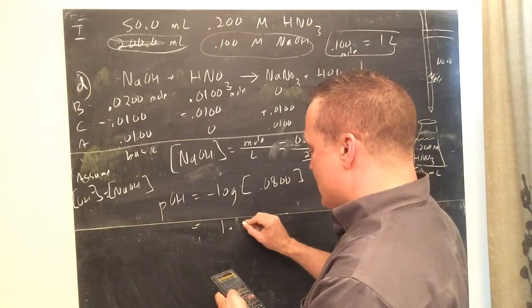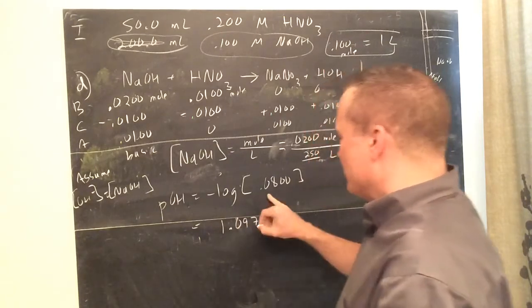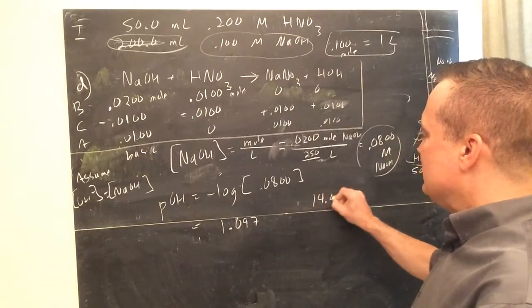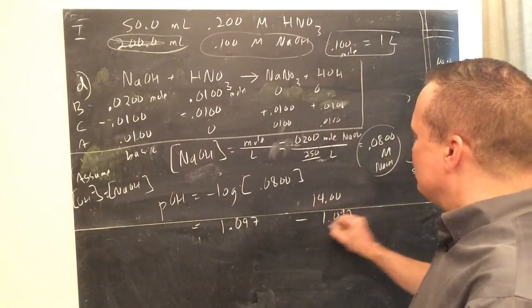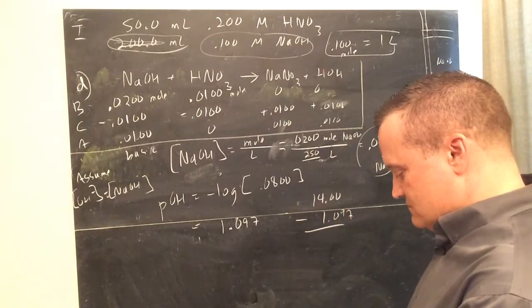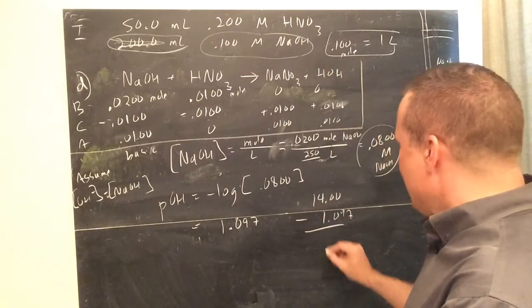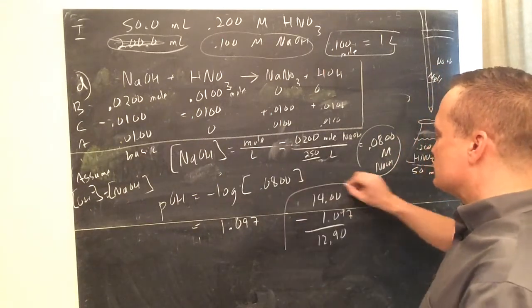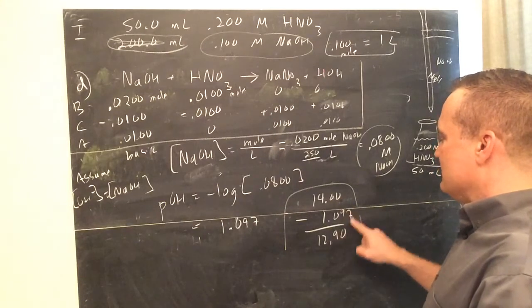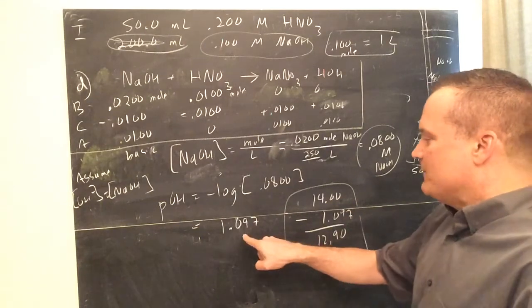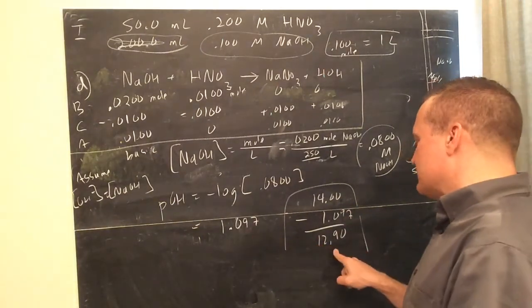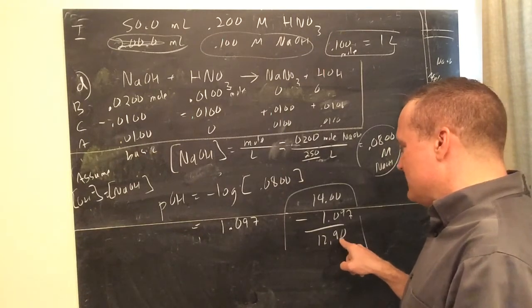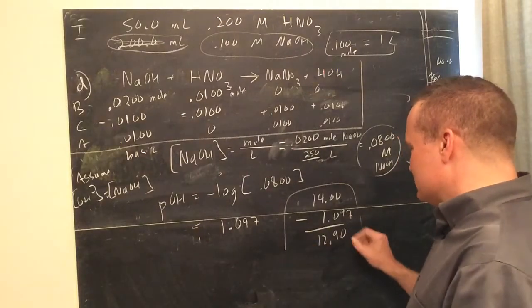POH is 1.097 — three sig figs, three after the decimal. Now that's your POH, so 14 minus 1.097 gives your pH of 12.90. Because of the rules of subtraction you can only show two decimal places, so 12.90. You would not be counted off if you put 12.903.